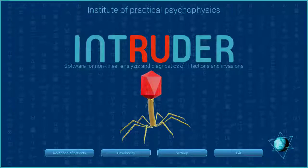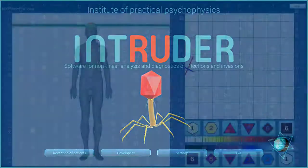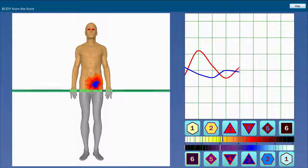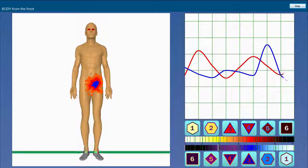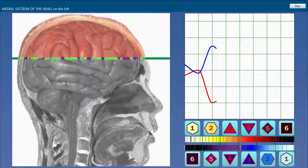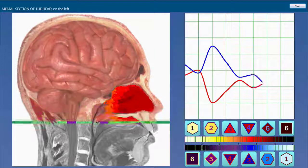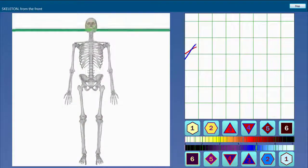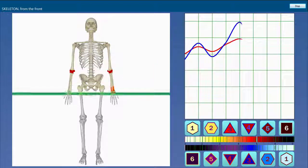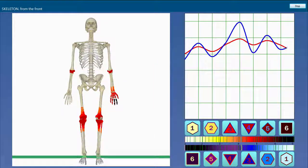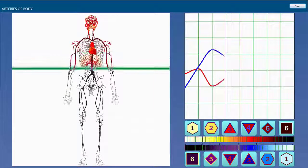We would like to present you Intruder Software, the latest specialized development of the Institute of Practical Psychophysics in the area of nonlinear analysis of microorganisms and helminthous activity, and evaluation of their resistance to modern antimicrobial and antiparasitic preparations.